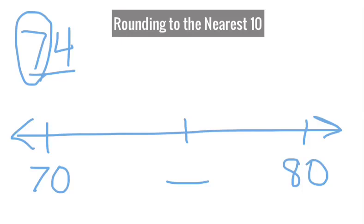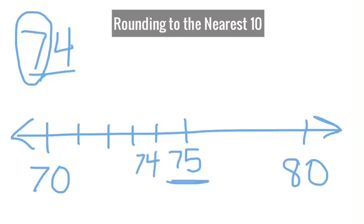Now I have to find my midpoint, or the number that goes in the middle, or the number that is half-way. Seventy-five is the number that goes in the middle, because the difference between seventy and eighty is ten, and half of that is five, so seventy plus five gives me seventy-five in the middle. Now I have to figure out where seventy-four goes on my number line. If I start counting at seventy — seventy-one, seventy-two, seventy-three, seventy-four — I know seventy-four goes there.